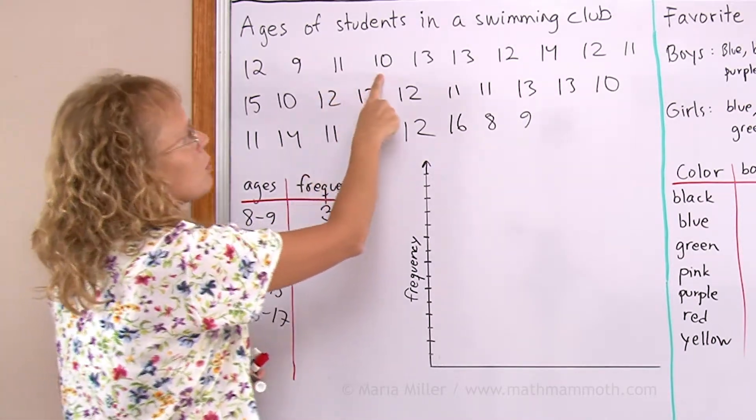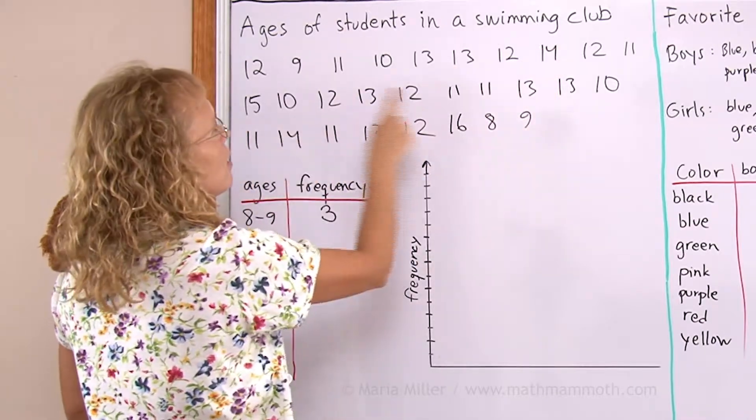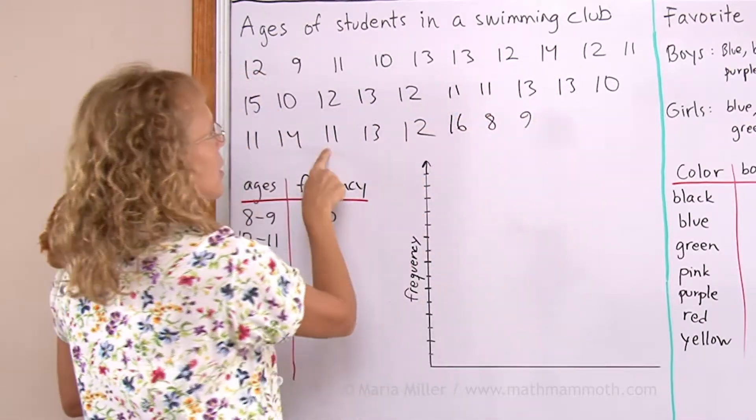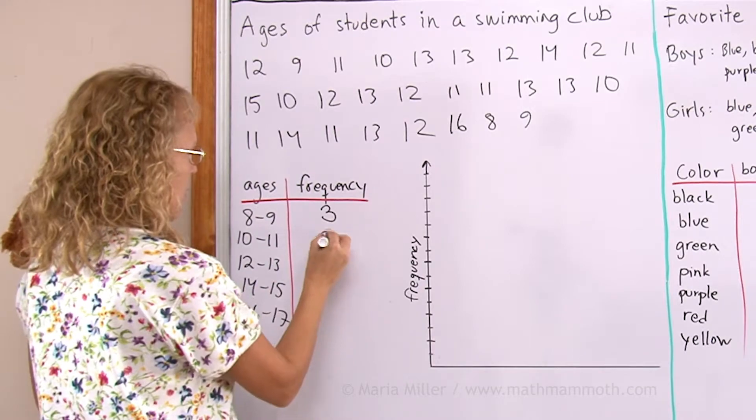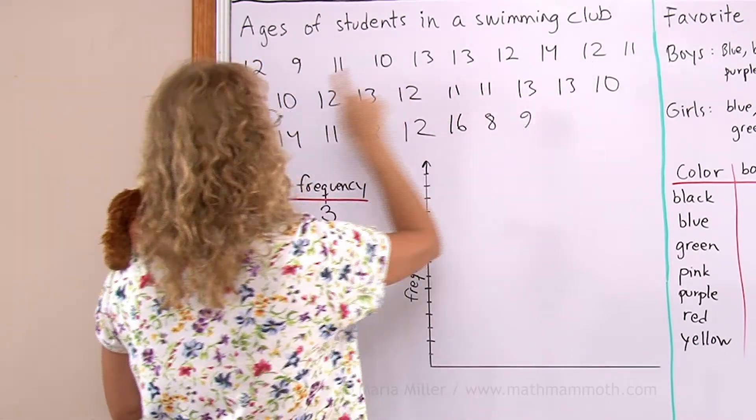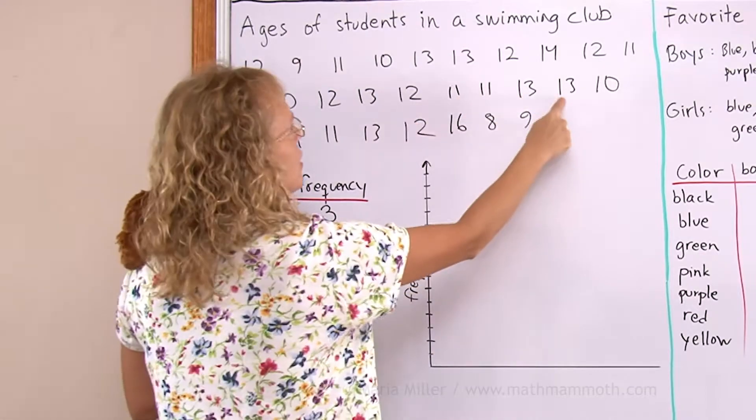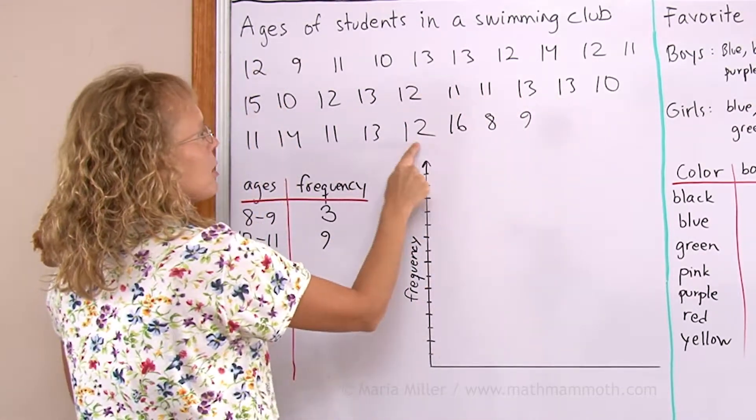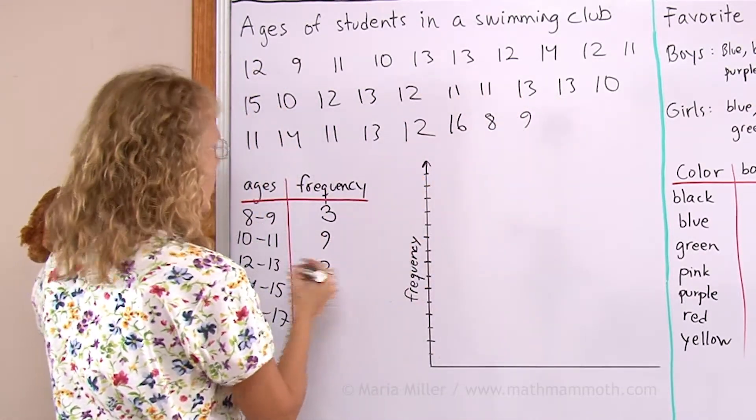10 to 11, that's 1, 2, 3, 4, 5, 6, 7, 8, 9, then 12 and 13, that's 1, 2, 3, 4, 5, 6, 7, 8, 9, 10, then 14 and 15.